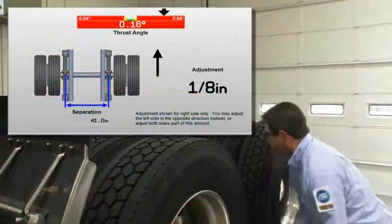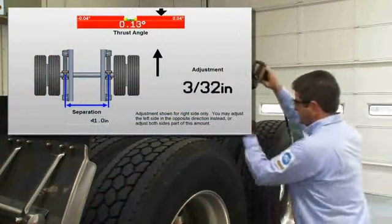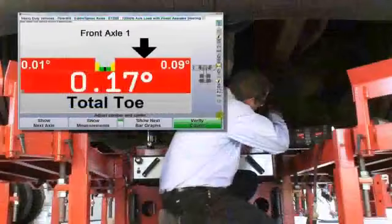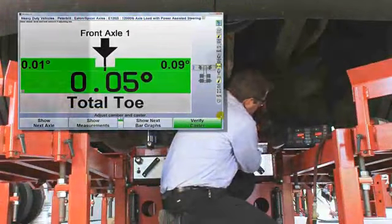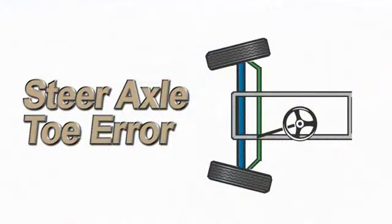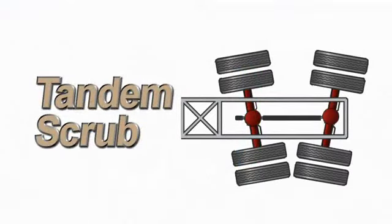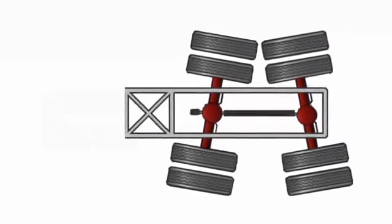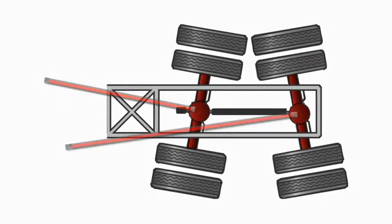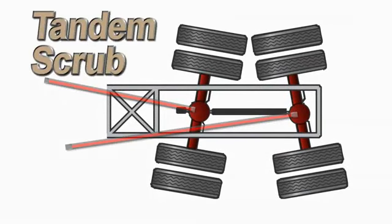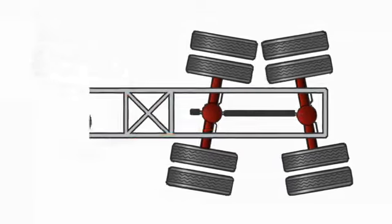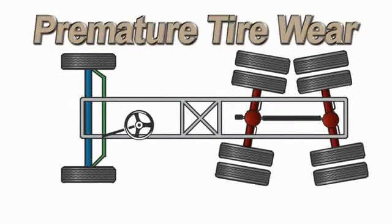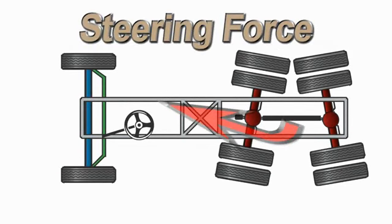Heavy-duty multi-axle alignment is all about correcting tandem scrub at the rear and tow on the steering axle. These are the most common misalignment conditions you see on heavy-duty vehicles. The drive axles are pointed in separate directions, creating tandem scrub.